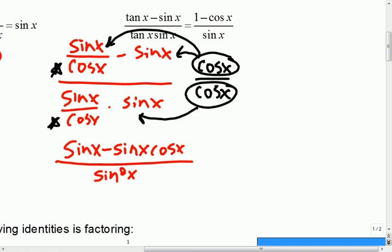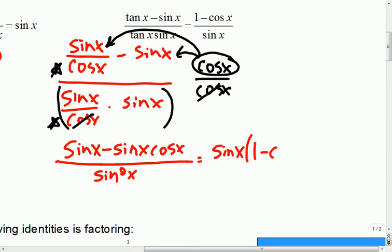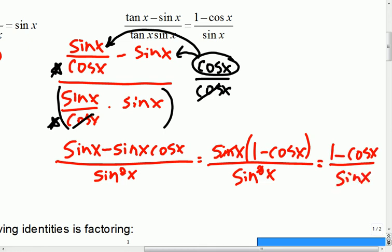Next step. Anybody have a next step? Somebody use the f word. Factor is the f word I was looking for. Not the one that some of you might have been thinking. So, if I factored this out, I'd get sin x times 1 minus cos x, and sin squared x on the bottom. I can see it's starting to look like this one now. It's starting to come together. If I simplify that, then I'd have the full proof completed.